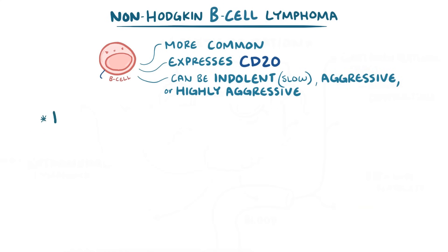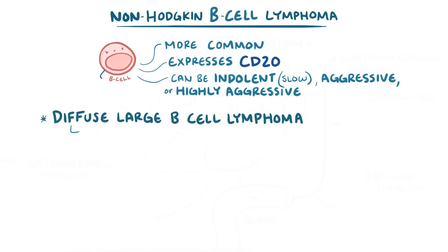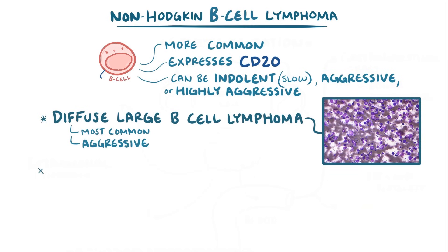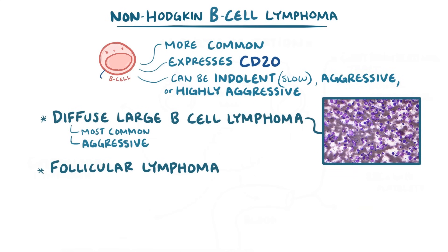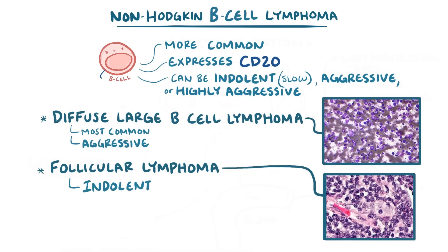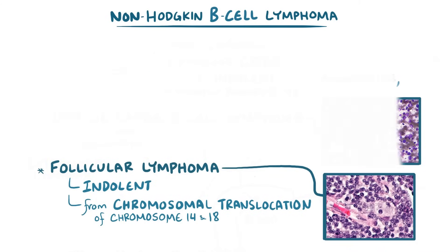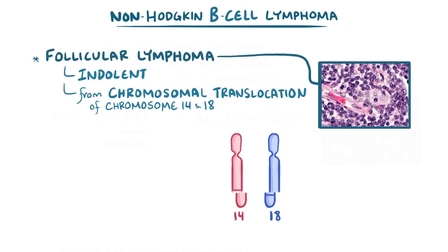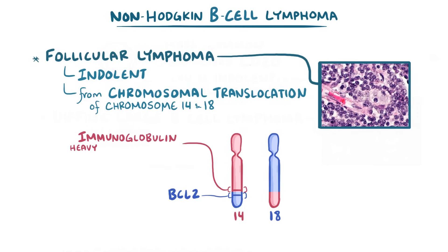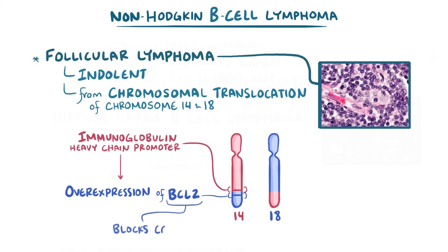The first type is diffuse large B cell lymphoma, the most common type, and it's aggressive. The second type is follicular lymphoma, which is indolent. One known mechanism involves a chromosomal translocation between chromosome 14 and 18, where the BCL2 gene from chromosome 18 is placed after the immunoglobulin heavy chain promoter on chromosome 14, resulting in overexpression of BCL2. Since BCL2 normally blocks apoptosis, overexpression prevents the cell from dying.